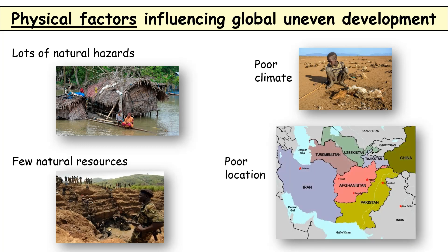Finally, location. Landlocked countries have a huge disadvantage because it's harder and more expensive to trade, and therefore they have less to spend on development. The poorest country in Southeast Asia is Afghanistan, which is landlocked, and Africa — the poorest continent — has 11 landlocked countries. Also, tropical regions are a poor location because of the diseases they attract, one of which is the tsetse fly, which attacks cattle and makes them unproductive, slowing development.